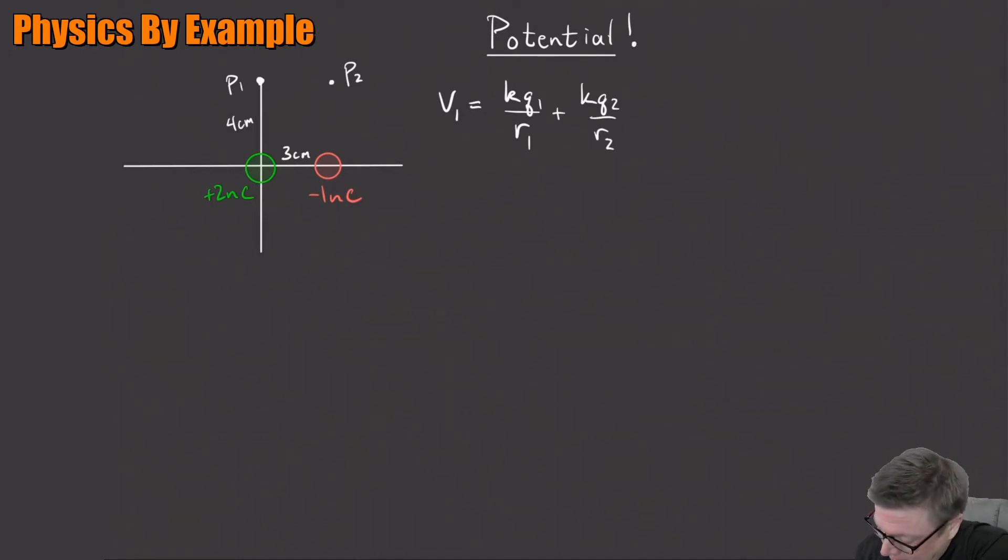Okay. So let's see what we get. So this is going to be nine times 10 to the ninth. Q1, what the heck is that? Q1, 2 times 10 to the minus nine. That distance is 4 centimeters, 0.04, because we want volts at the end. That's an SI unit.